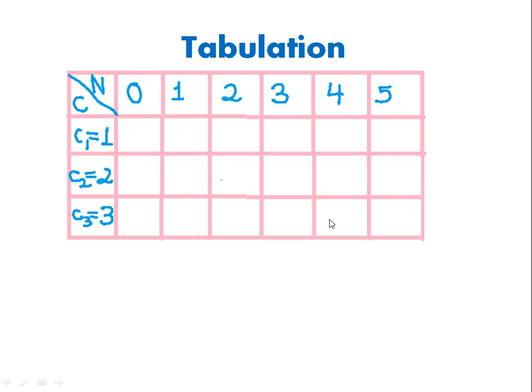Let's start by filling n equals 0 for all rows. In how many ways can you pay no money? If you have only a 1-rupee coin and want to pay nothing, there is exactly one way — by paying absolutely no money. Similarly, if you have 1 and 2-rupee coins, there is still only one way, and if you have 1, 2, and 3-rupee coins, also only one way.